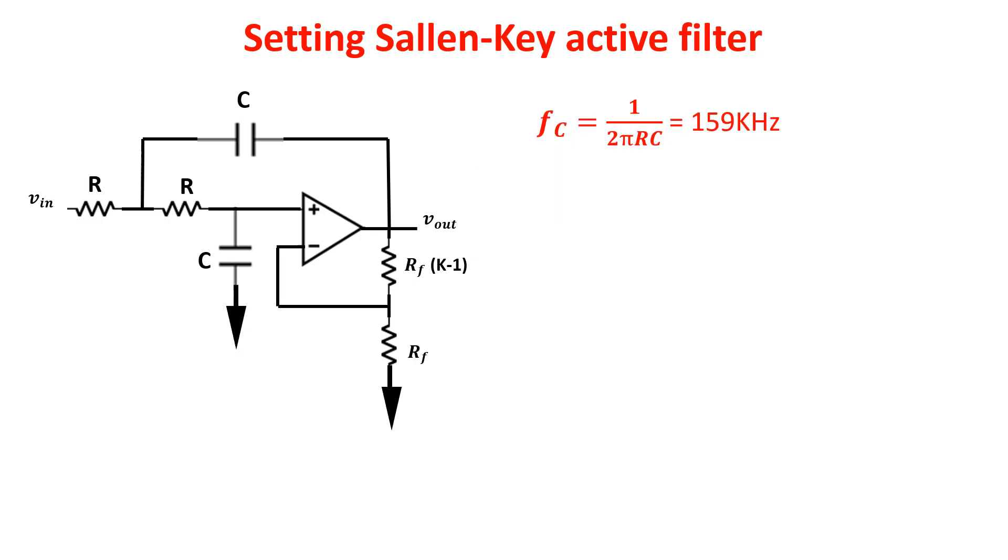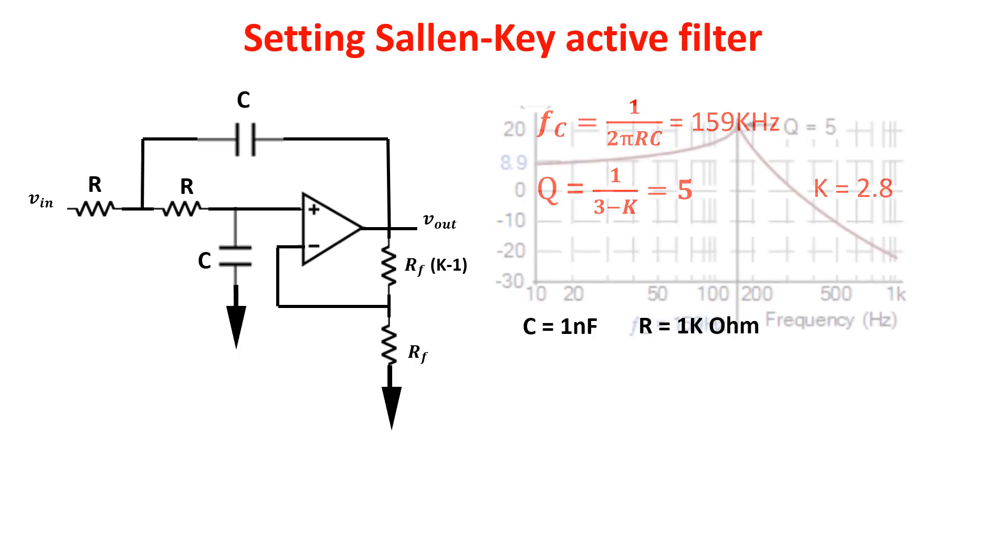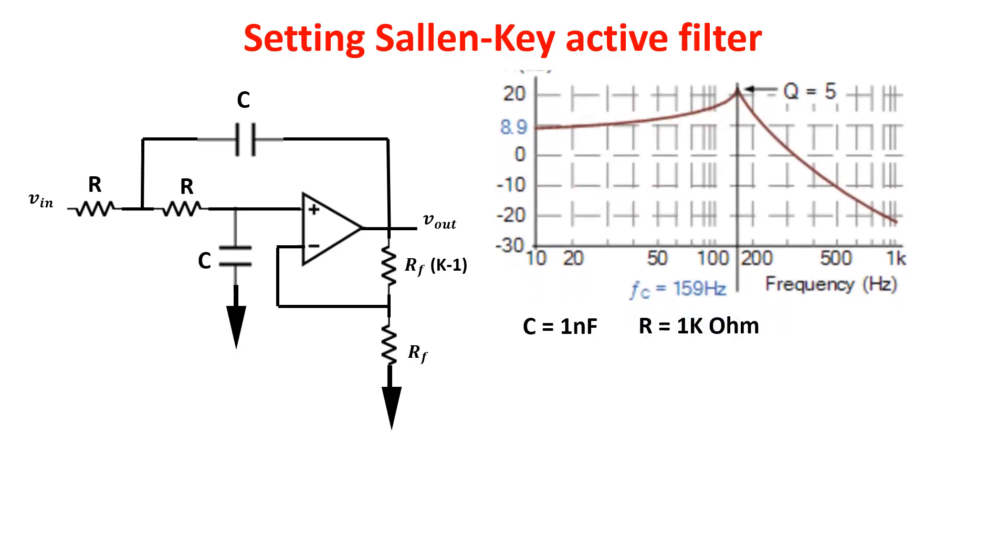If we need a steeper response around the corner frequency we can require a Q of 5. In this case the gain of the op-amp is 2.8. Since the cutoff frequency remains the same R and C remain the same. The frequency response becomes this where you see the peak at the corner frequency which worsens the flatness at the passband but improves the steepness around the corner frequency.